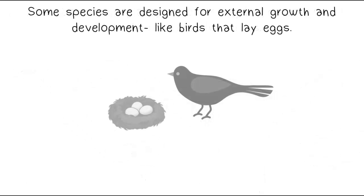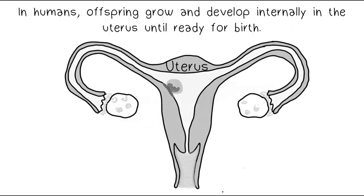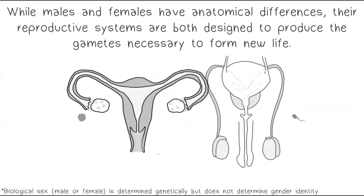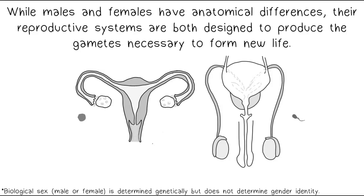Some species are designed for external growth and development, like birds that lay eggs. In humans, offspring grow and develop internally in the uterus until ready for birth. During growth and development, a special structure called the placenta helps to nourish the embryo. While males and females have anatomical differences, their reproductive systems are both designed to produce the gametes necessary to form new life.